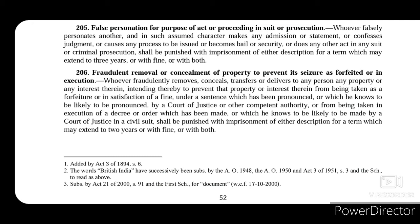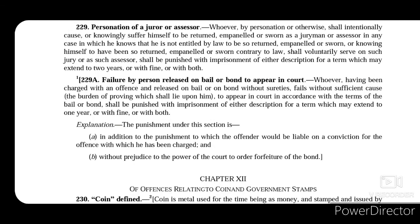Another section mentioned later in this chapter is Section 229, which also comes under the head of false personation. It talks about personation of a juror or assessor. Whoever by personation or otherwise intentionally causes or knowingly suffers himself to be returned, empaneled, or sworn as a juryman or assessor, would be punished with imprisonment for a term which may extend to 2 years, or with fine, or with both. It should be noted that this section is no longer practically useful as the jury system has been abolished in India.